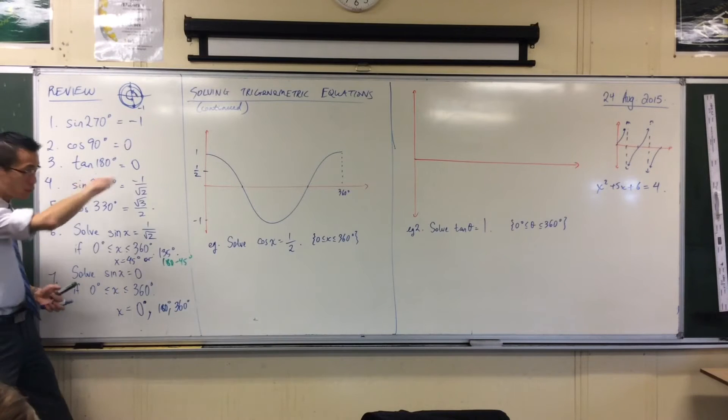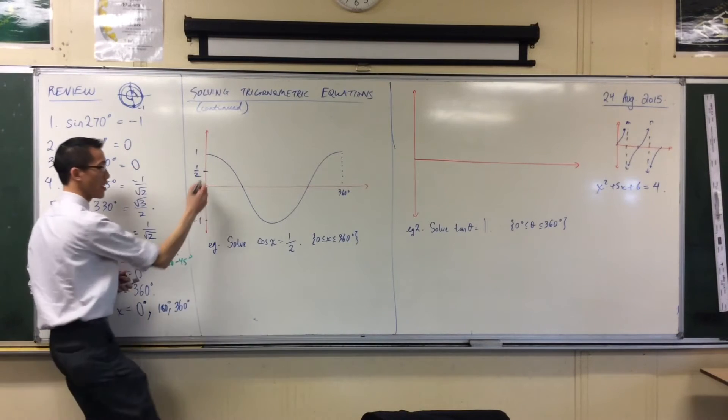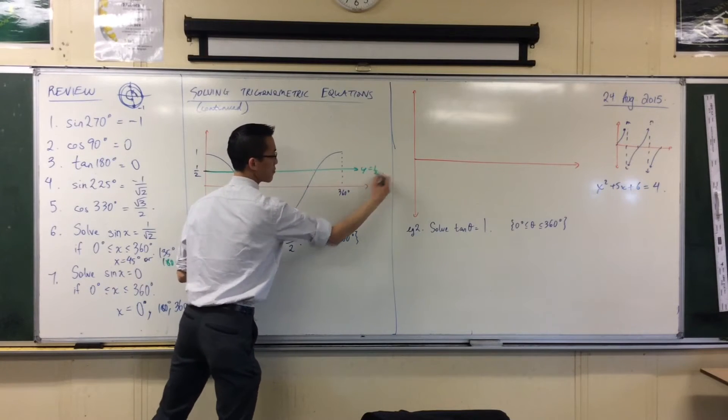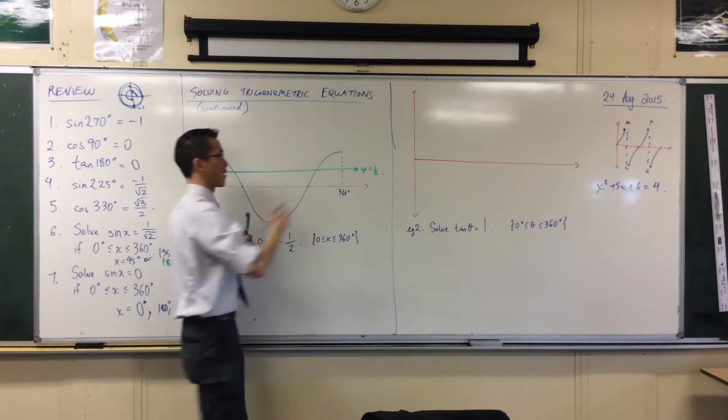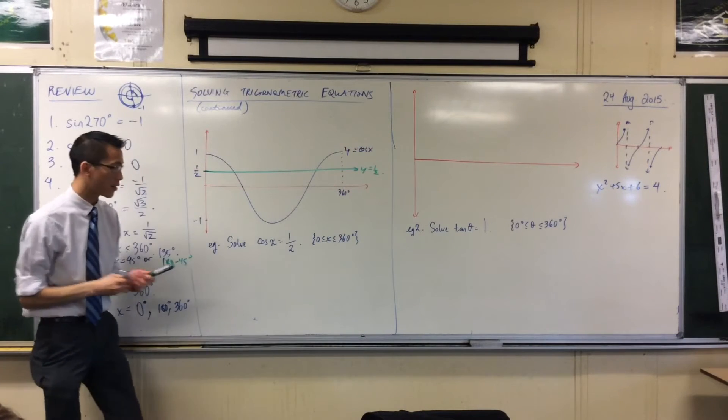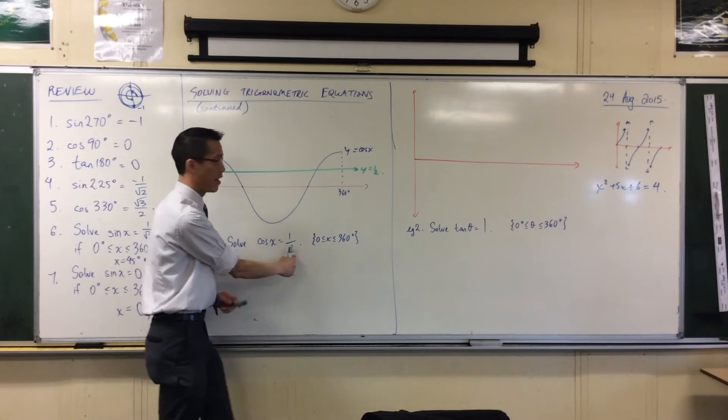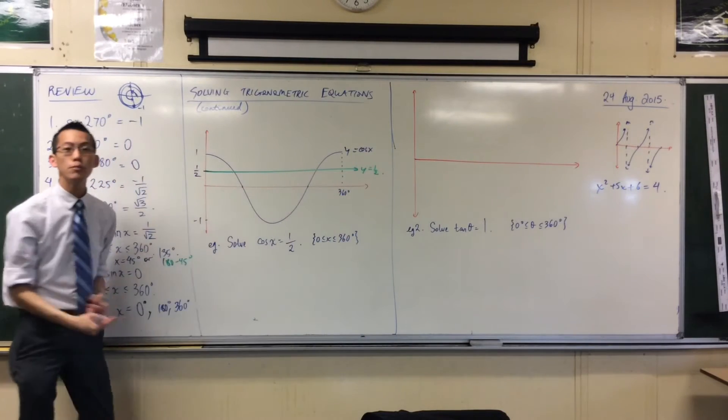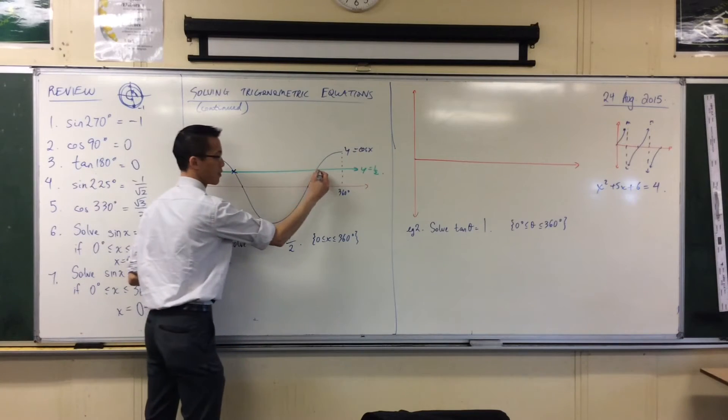So right through the graph, I'm going to draw in a half. That's a half and my graph up here, the original one, is cos x. So if I want cos x equals a half, that's where cos x equals a half. And you can see I've got two points of intersection. One, two.